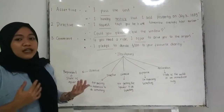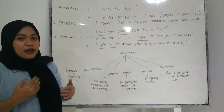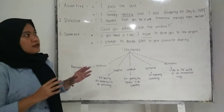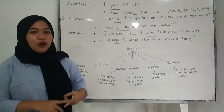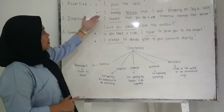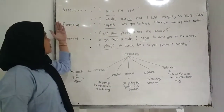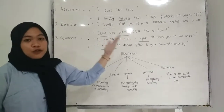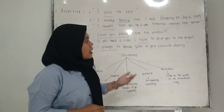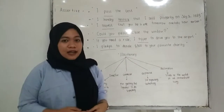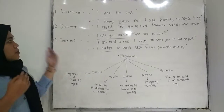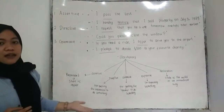What is assertive? Assertive is an illocutionary act that represents a state of affairs, such as painting or telling something. For example: 'I passed the test,' and 'I hereby testify that I sold property on July 3rd, 1989.' The words 'passed' and 'testified' mean that the speaker wants to represent a state of affairs.